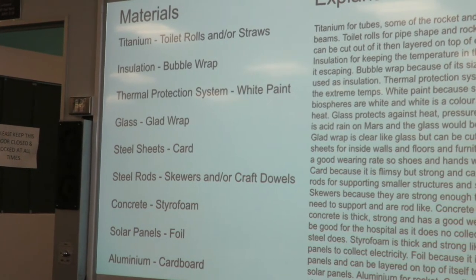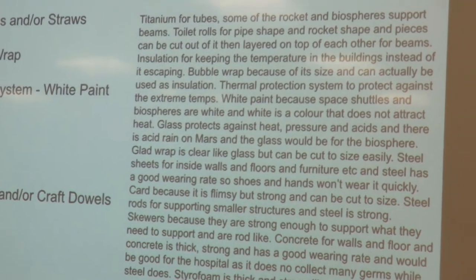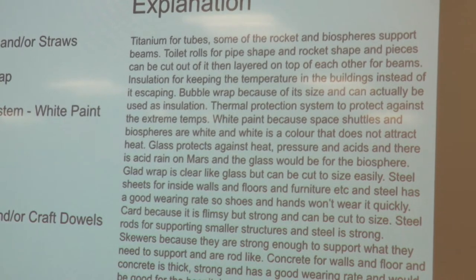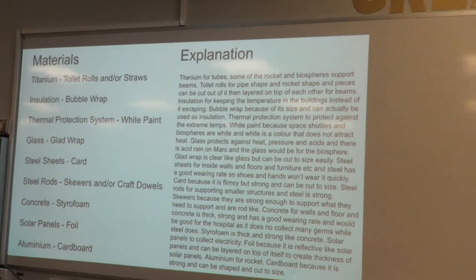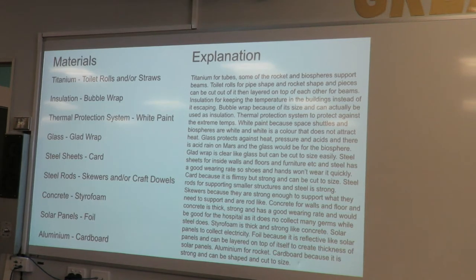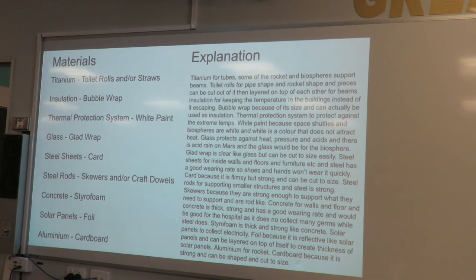My explanation for these materials: titanium is for tubes, some of the rocket, and biosphere support beams. Toilet rolls are for pipe shape and rocket shape, and pieces can be cut out and laid on top of each other for beams. Insulation is for keeping the temperature in the buildings instead of it escaping. Bubble wrap, because of its size, can actually be used as insulation.